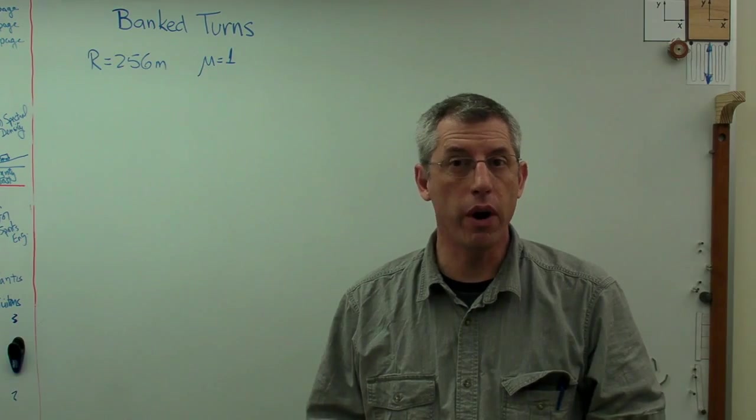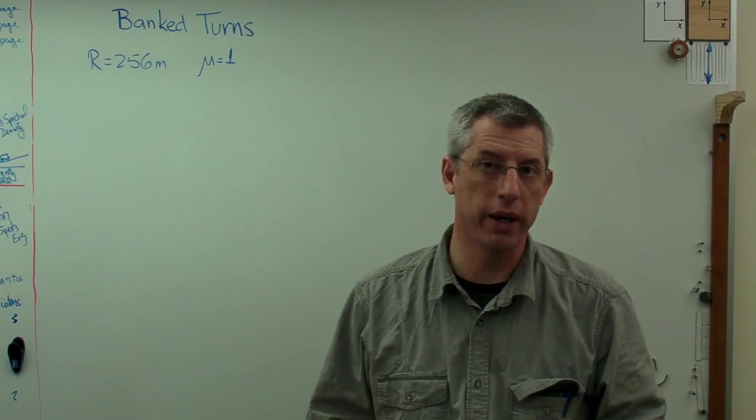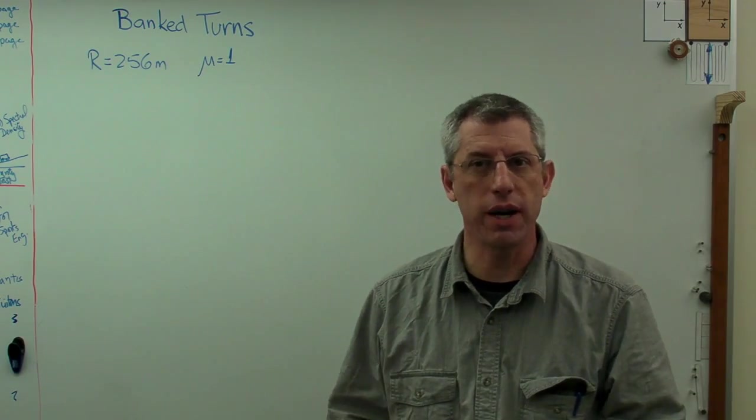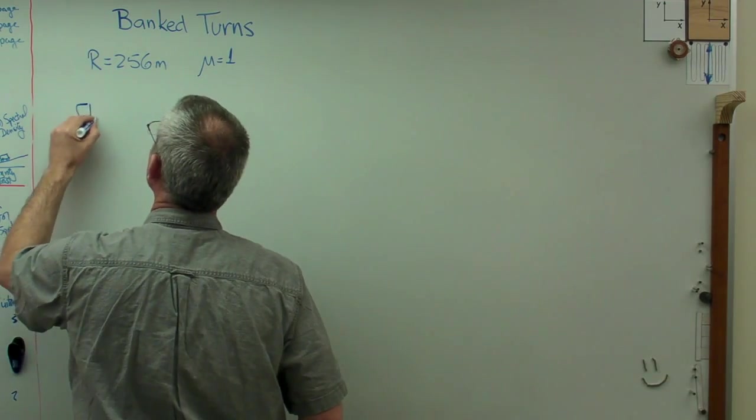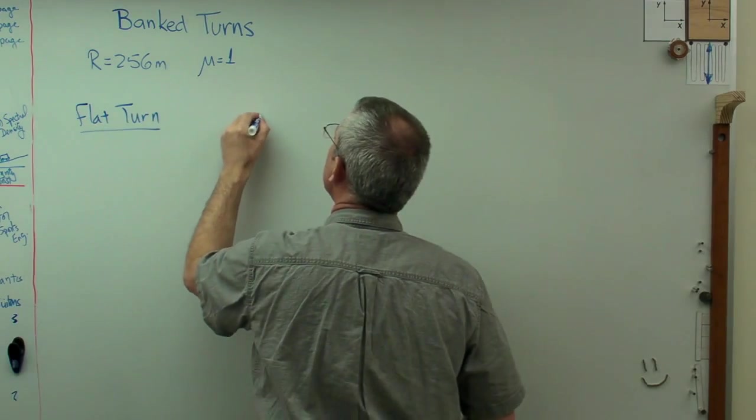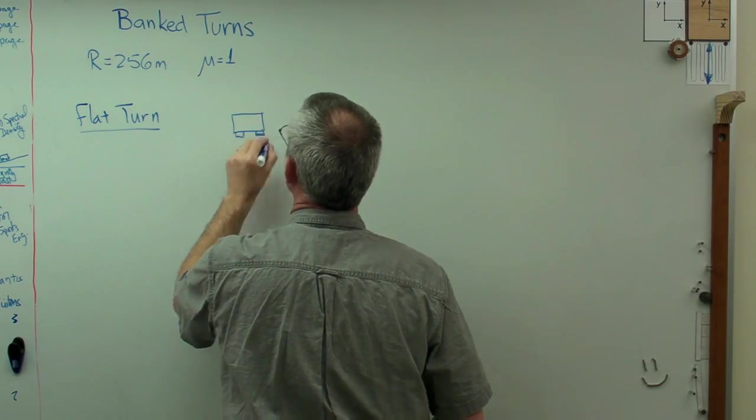Now I'm going to assume there's no aerodynamic downforce. Indy cars, these open wheel race cars, all have wings on them to help them go faster. We'll maybe do that in another video. For right now, no aerodynamics. Let's start by looking at a flat turn. What if the turn wasn't banked and you've got a car there, that's a car.